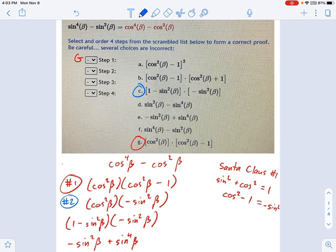Right here: one minus sine squared and negative sine squared. That's step C, step number two. Except in this example I didn't go straight there. I went there in one step down to this part right here, which is basically trading all your cosines for sines using the Santa Claus identity.